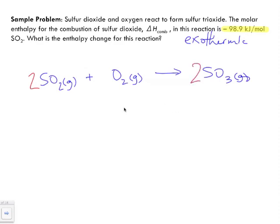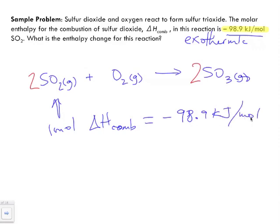However, for this reaction, we have this based on one mole. So one mole of sulfur dioxide has a change in enthalpy for this combustion reaction of -98.9 kilojoules per mole. But we don't have one mole, we have two moles.